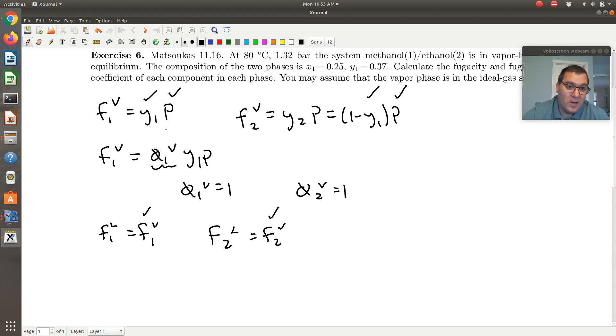But here, since we're asked for the fugacity coefficient, that suggests using the convention where I expand my fugacity of the liquid phase with respect to an ideal gas. So that would tell me, I know F1L now, that F1L is equal to phi1L X1 times P. I know P, I know X1, I know F1L, so that allows me to solve for phi1L.